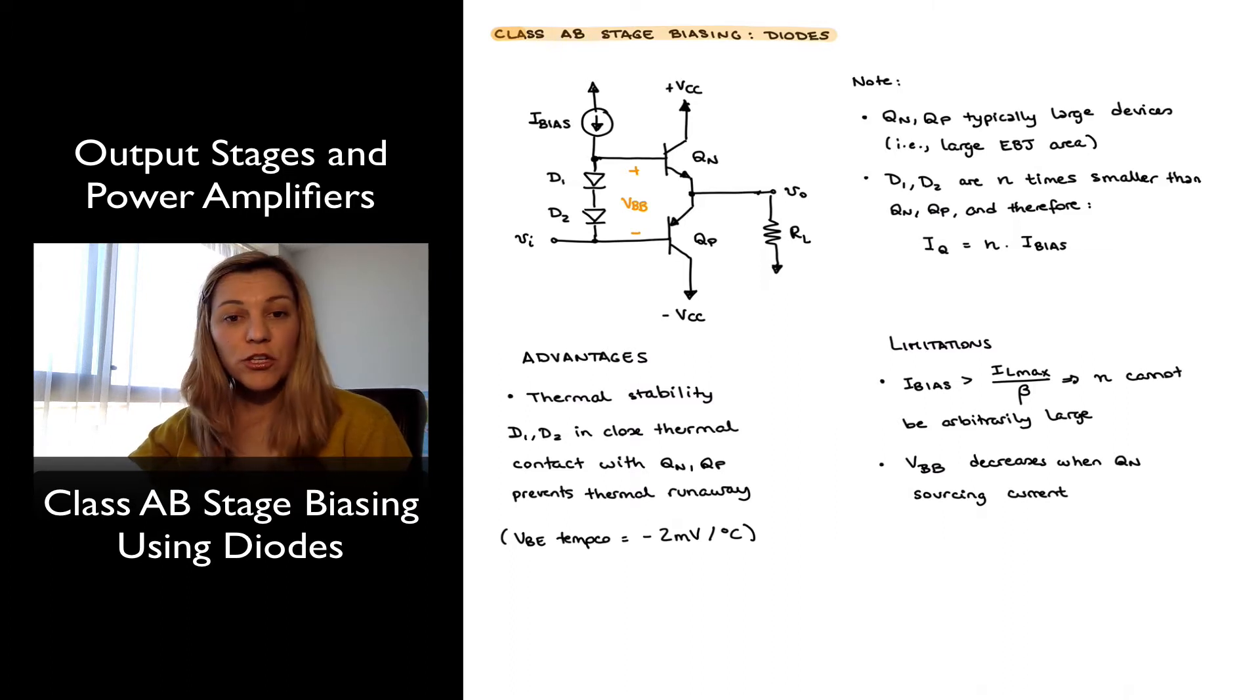One possible biasing configuration is the addition of two diodes in series, as shown in this figure. We have diodes D1 and D2 that are providing that VBB voltage that essentially biases the base emitter junctions of output transistors Qn and Qp. Notice that there is a current source, I-bias, whose job is essentially to bias those diodes D1 and D2 so that they are turned on.